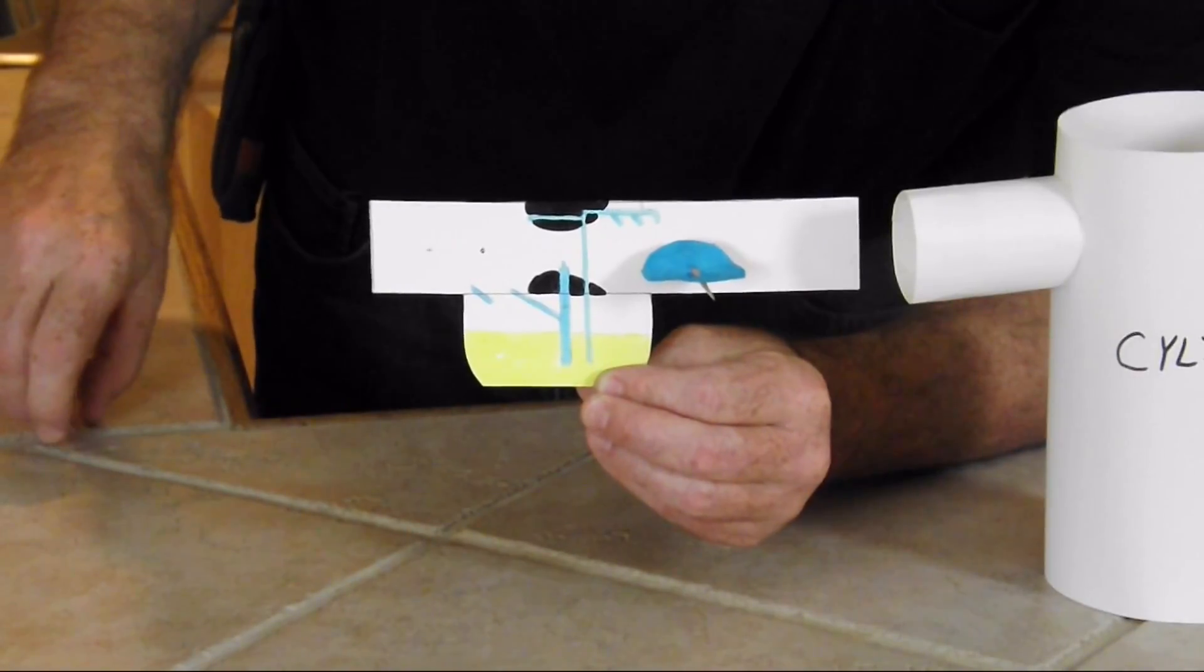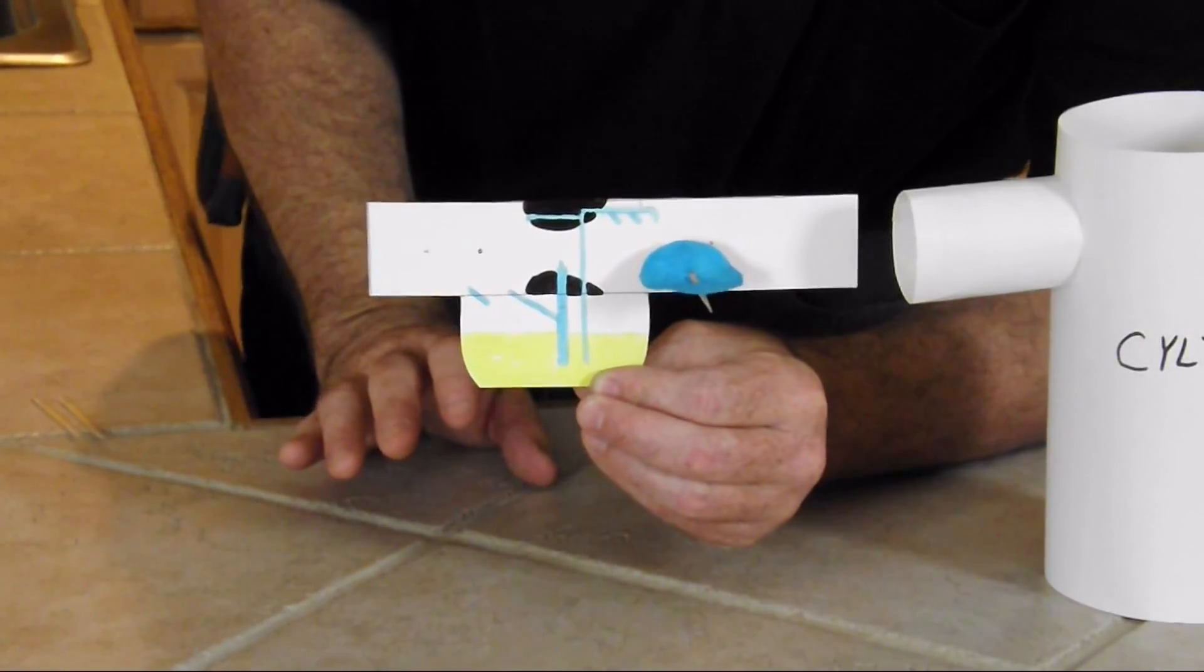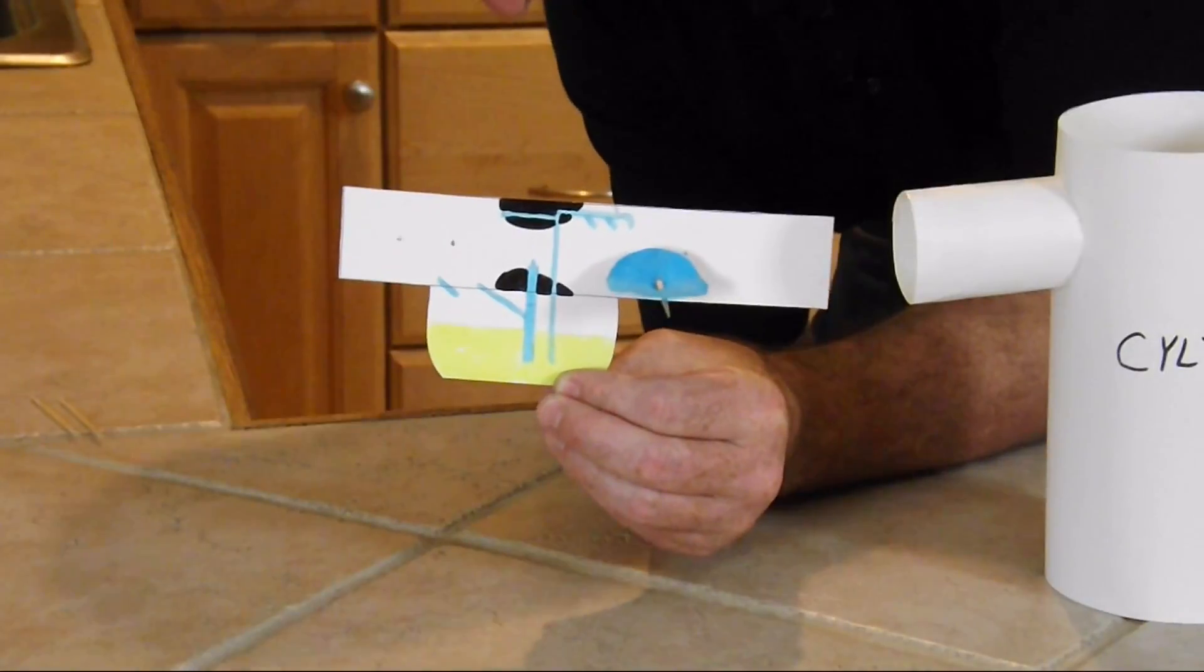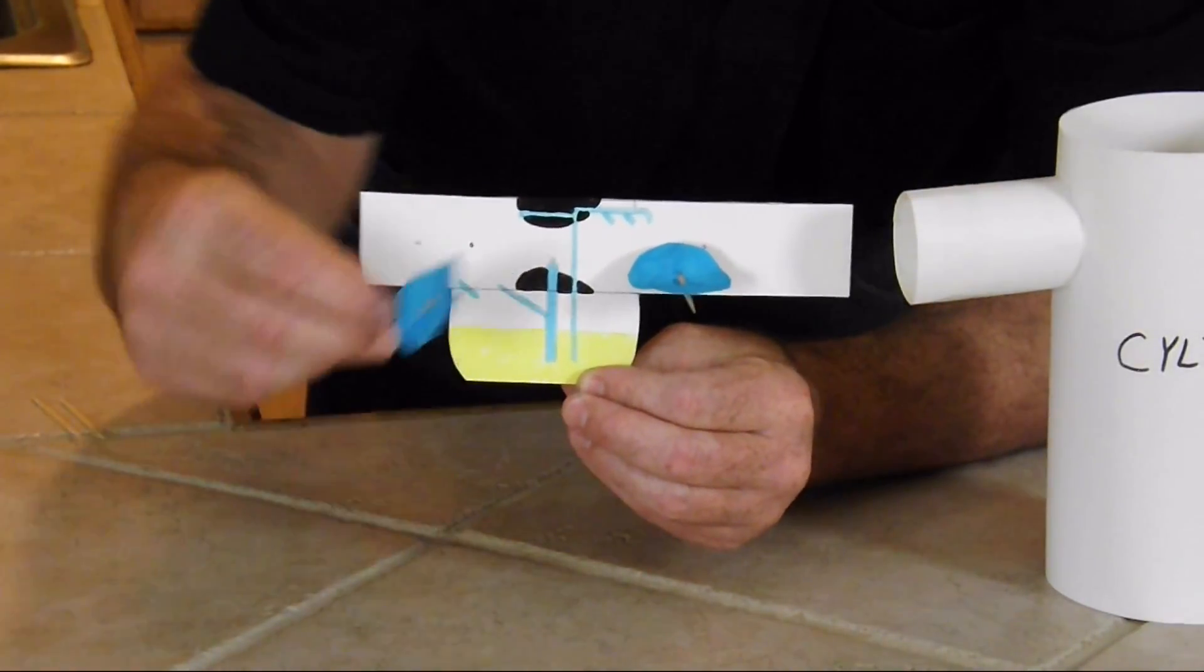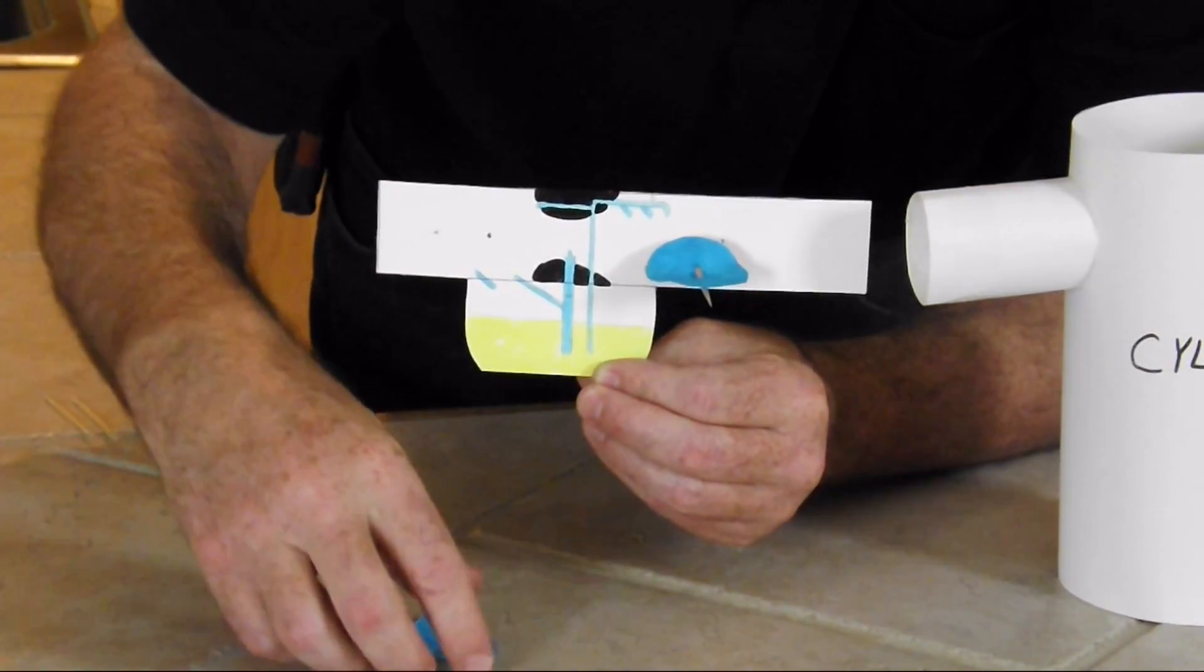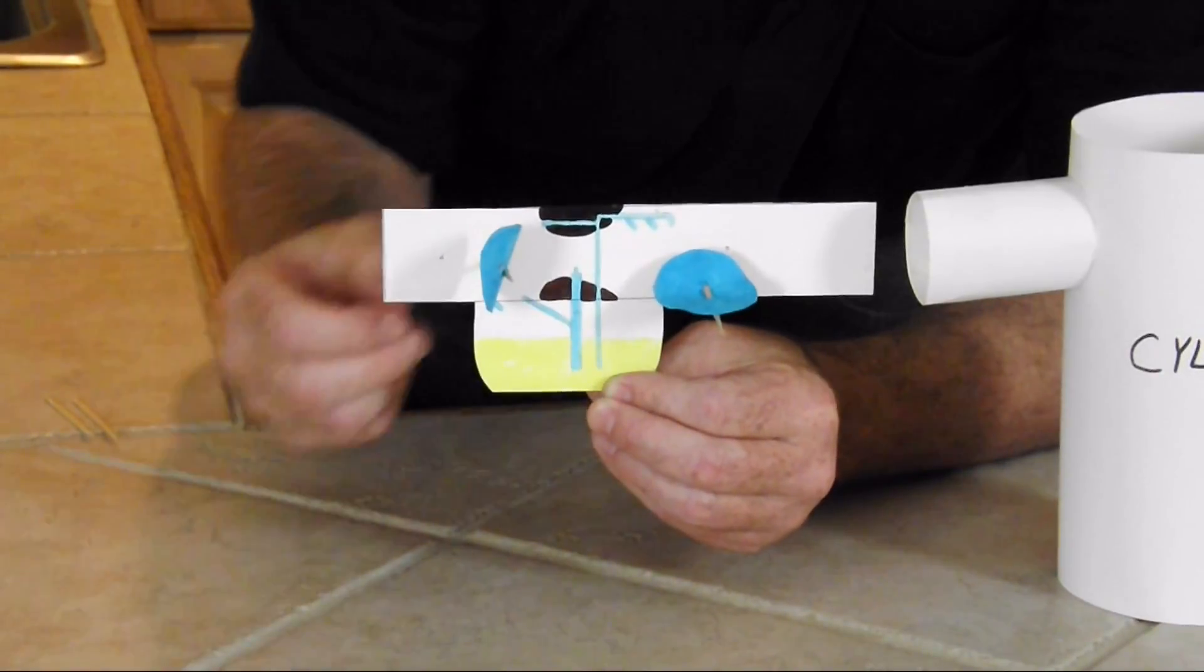Now, when you first start your engine, and the engine is cold, you're going to have a plate similar to your throttle in the front of your carburetor.